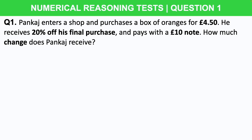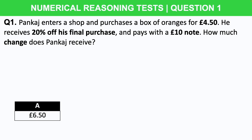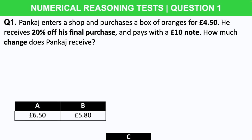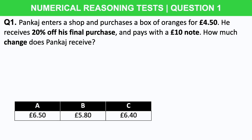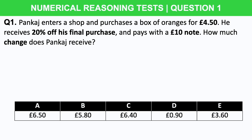Let's start off with this percentage question to warm you up a little bit. Question one: Pan Cash enters a shop and purchases a box of oranges for £4.50. He receives 20% off his final purchase and pays with a £10 note. How much change does Pan Cash receive? Is it a) £6.50, b) £5.80, c) £6.40, d) 90p, or e) £3.60?